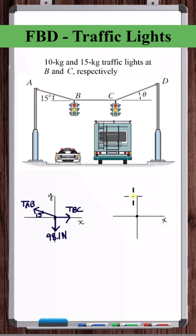All right, let's do the free body diagram at point C. This is acting down at 15 times 9.81, 147.2 newtons.